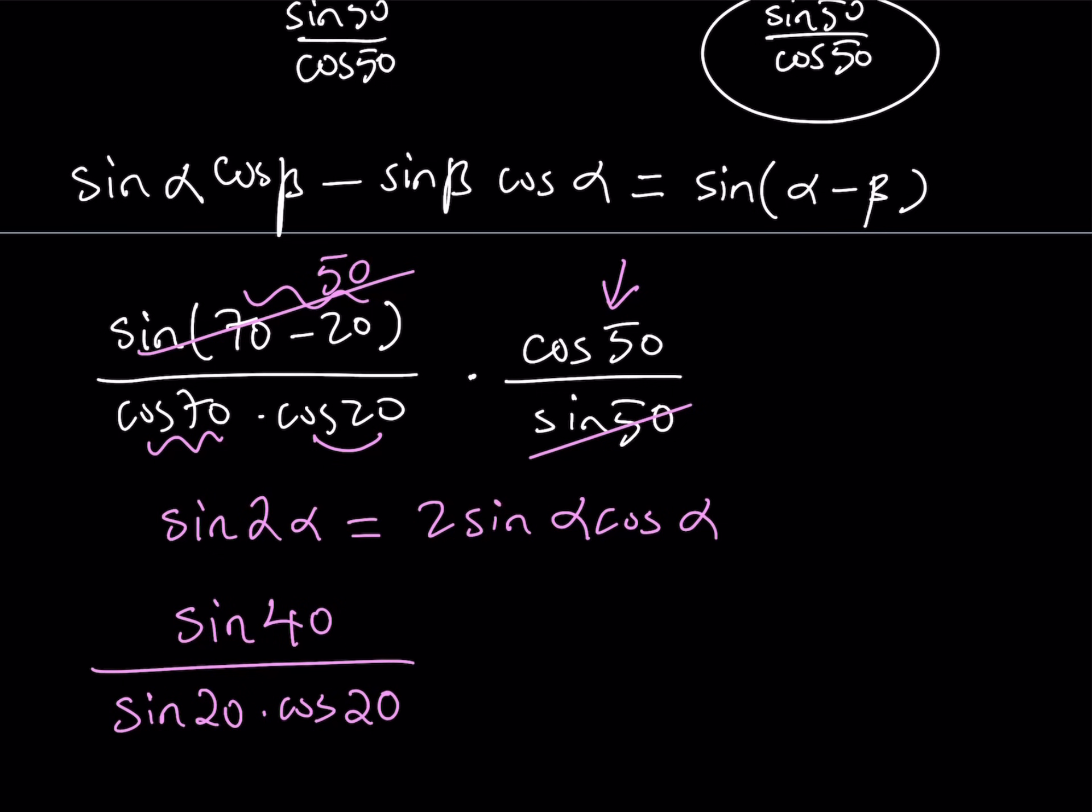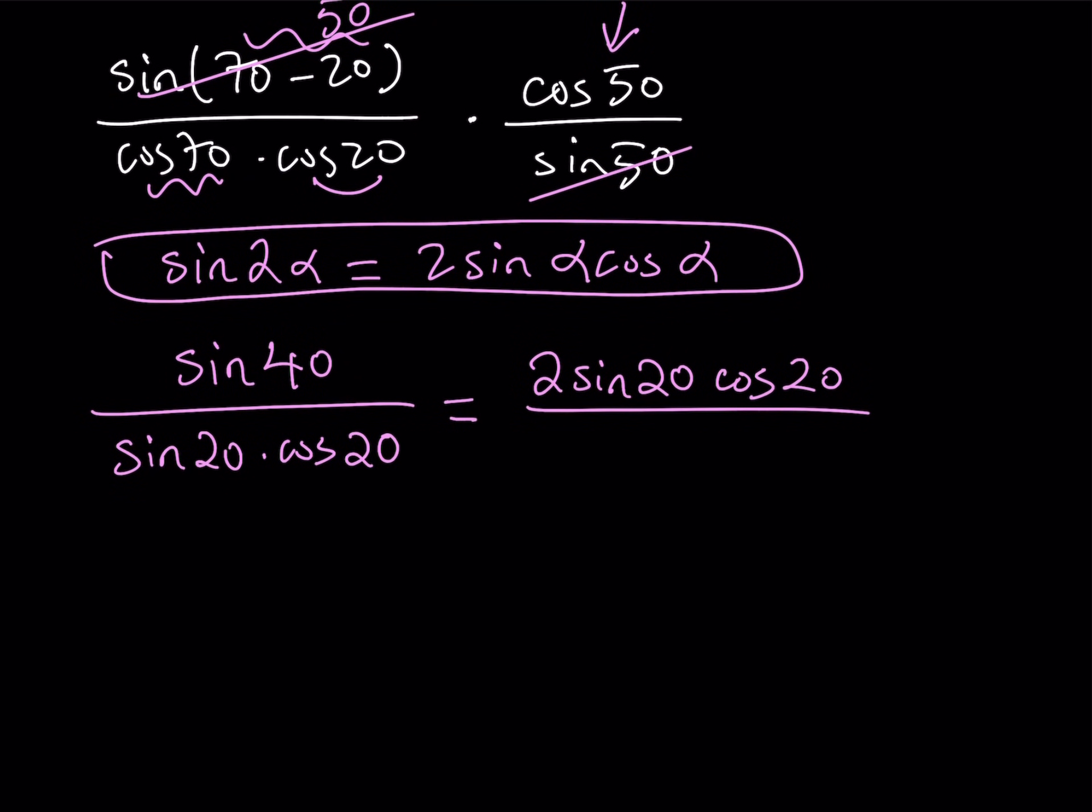Now sine 40 and sine 20, cosine 20. So they have the double angle relationship. So now I can use this identity for sine of 40. And that can be written as basically 2 sine 20 cosine 20. And that is divided by sine 20 times cosine 20.